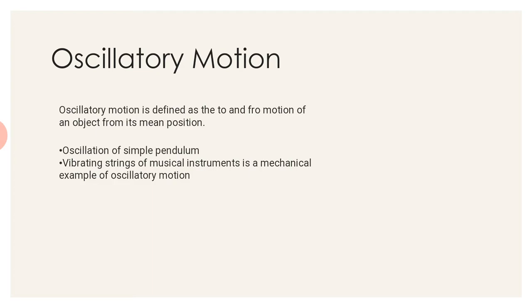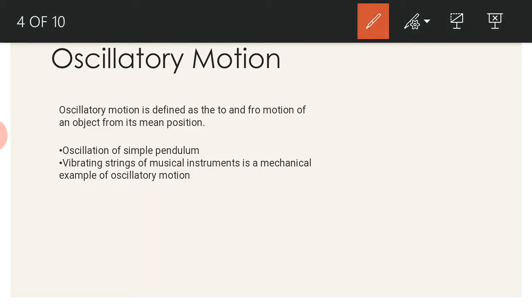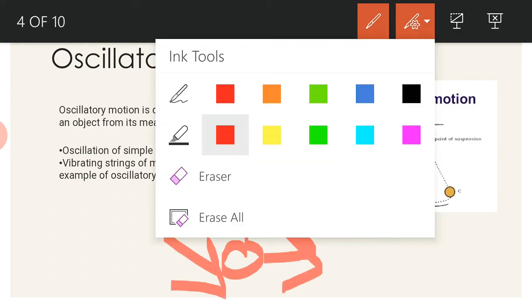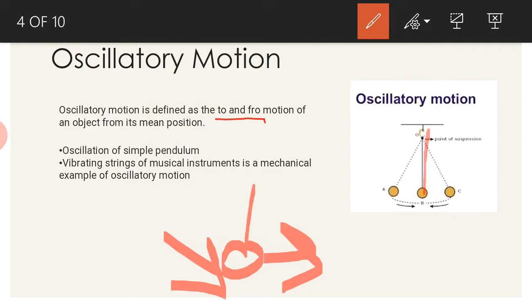Oscillatory motion is defined as the to and fro motion of an object from its mean position. The pendulum's rest position is the straight point, while the pendulum moves to and fro its rest position. This is called the oscillatory motion of the pendulum.